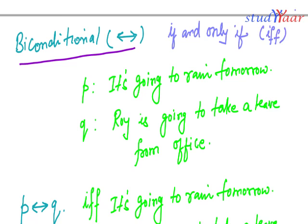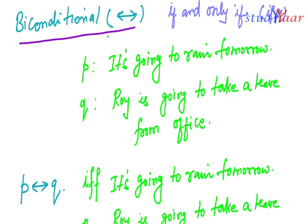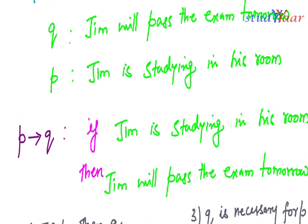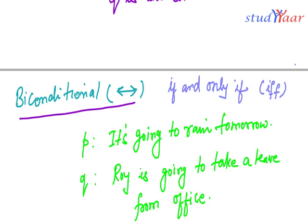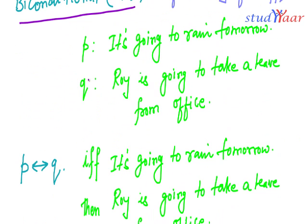In a bi-conditional, if Q is true — if Roy has taken a leave — then it is understood that it had rained. But in a conditional (implication), if Jim has passed the exam, it is not always true that Jim had studied, since he could have cheated. That is the key difference: in a bi-conditional, the truth of Q ensures that P is also true.